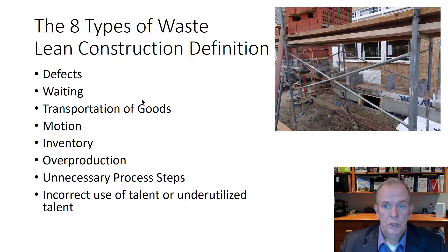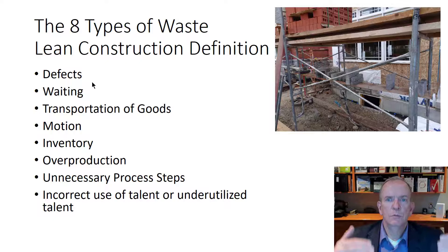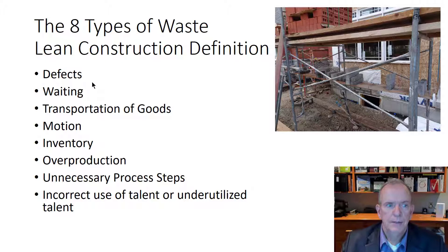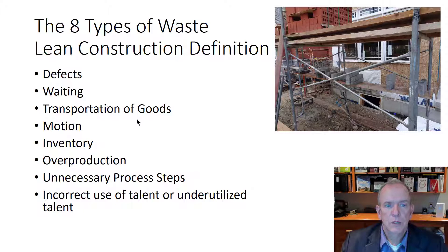Lean construction, which is all about eliminating or reducing waste, defines waste in eight areas — all of which impact productivity. The first is defects. The second is waiting — for example, a crew ready to start but a delivery doesn't arrive, or a preceding trade is behind schedule. Third is transportation of goods: delivering materials too early means they're in the way and may get damaged or stolen; too late and you're waiting.